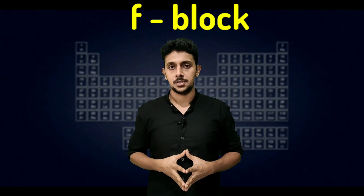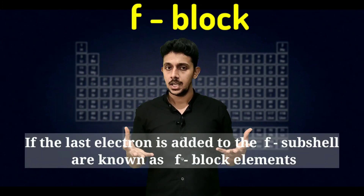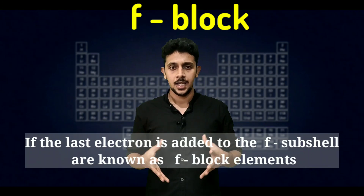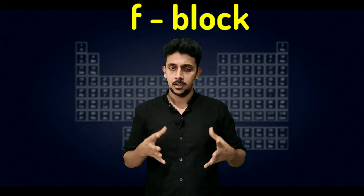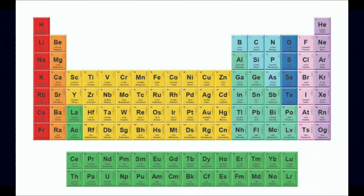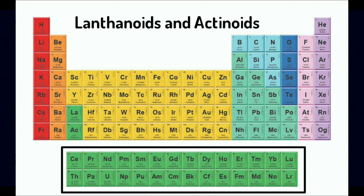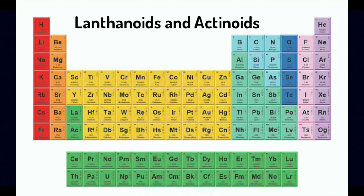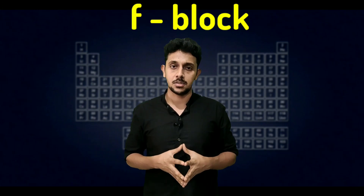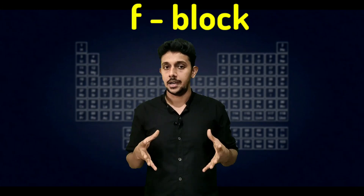The last block is f-block elements. If the last electron is added to the f sub-shell, they are known as f-block elements. In our periodic table, the lanthanoids and actinoids are considered f-block elements because their last electron is added to the f sub-shell.